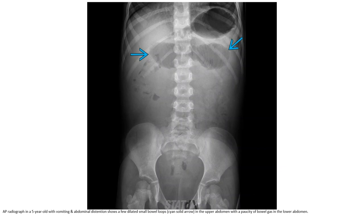A radiograph in a 5-year-old with vomiting and abdominal distension showed dilated bowel loops in the abdomen with air-fluid levels in the lower abdomen.